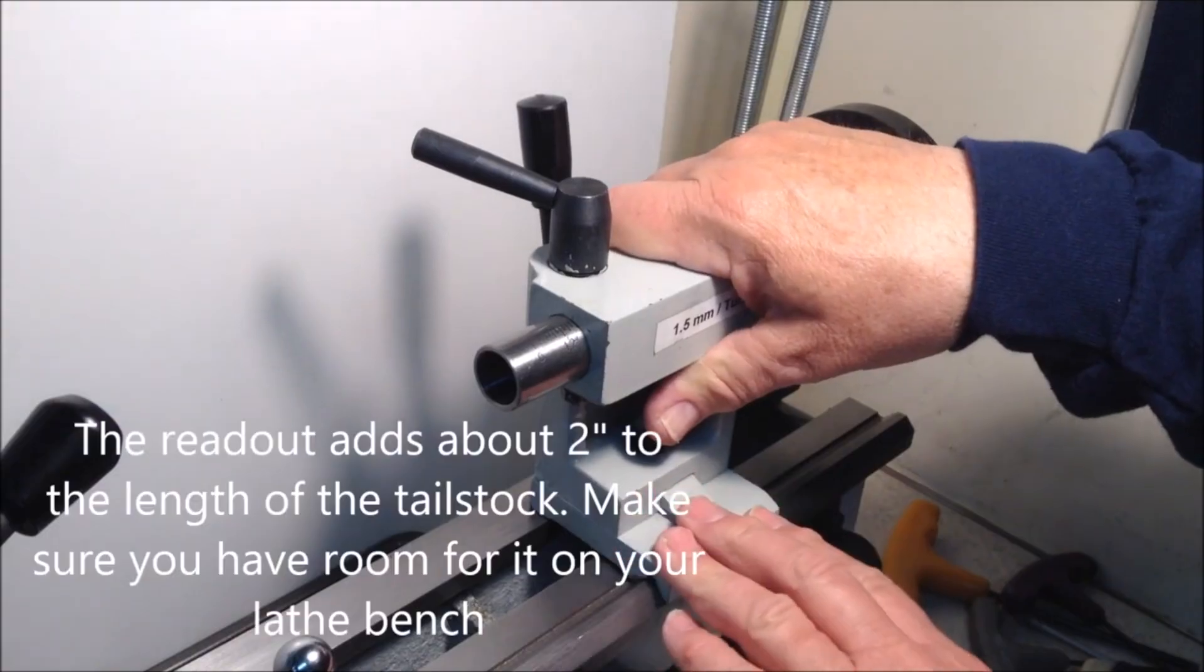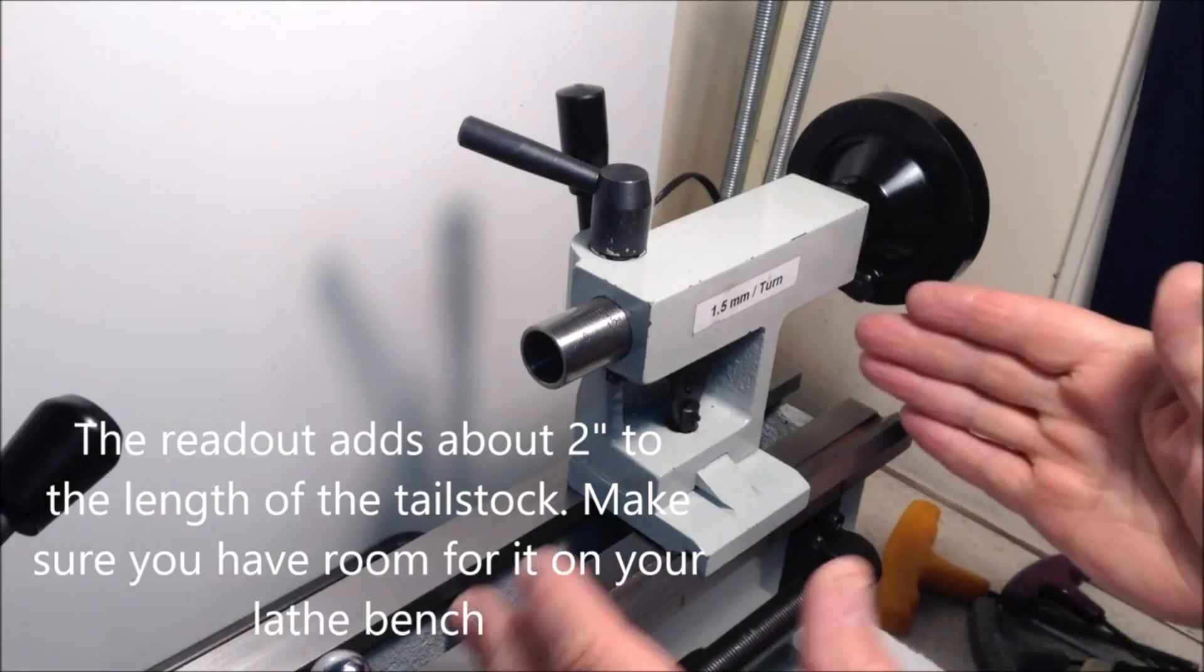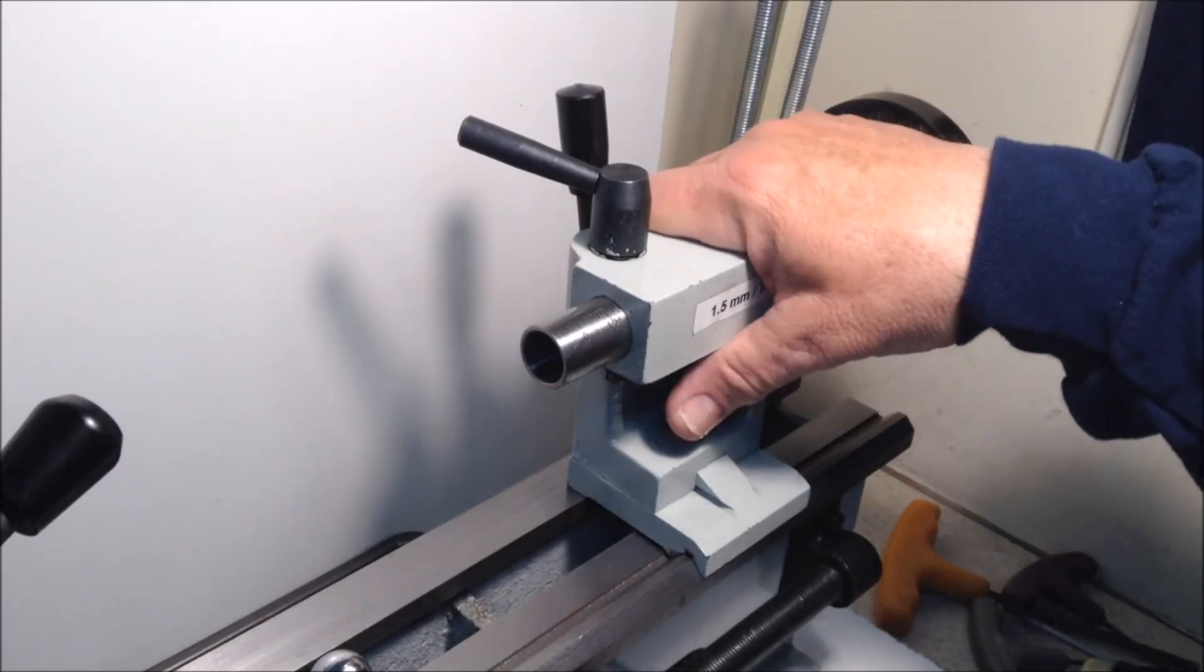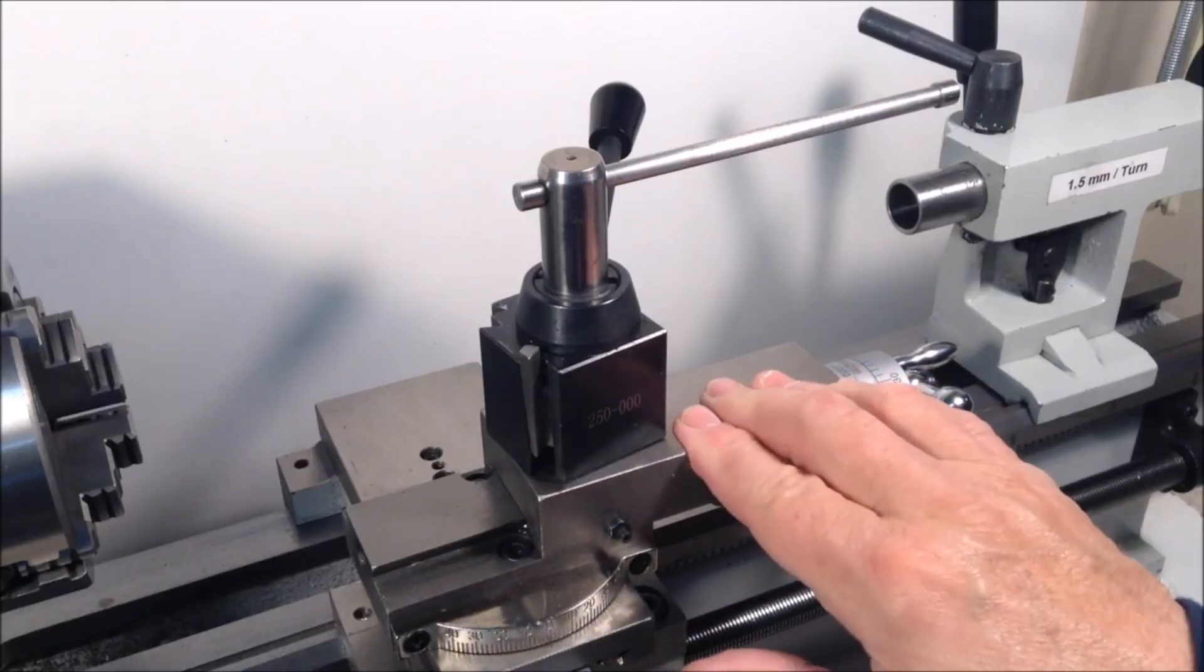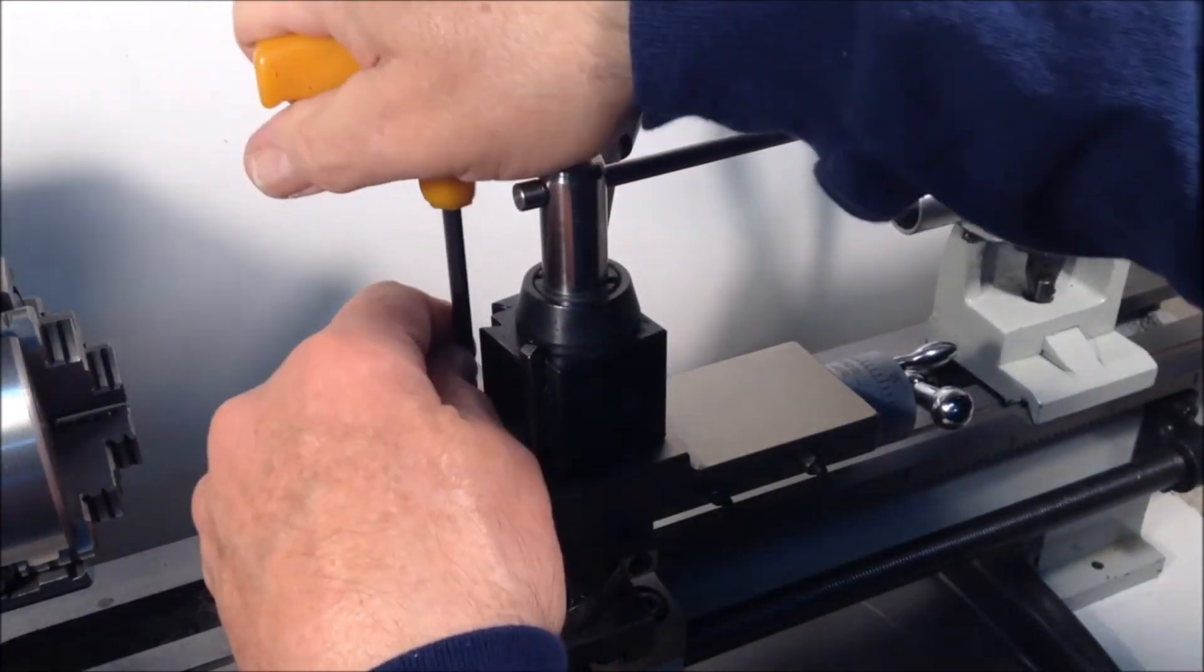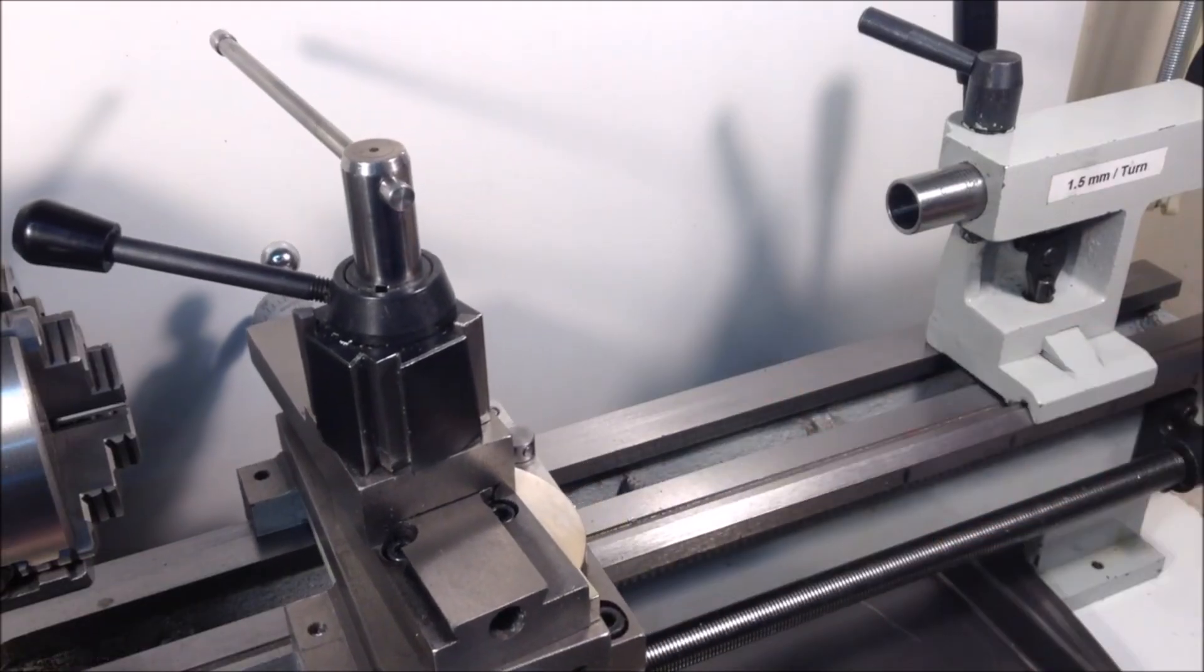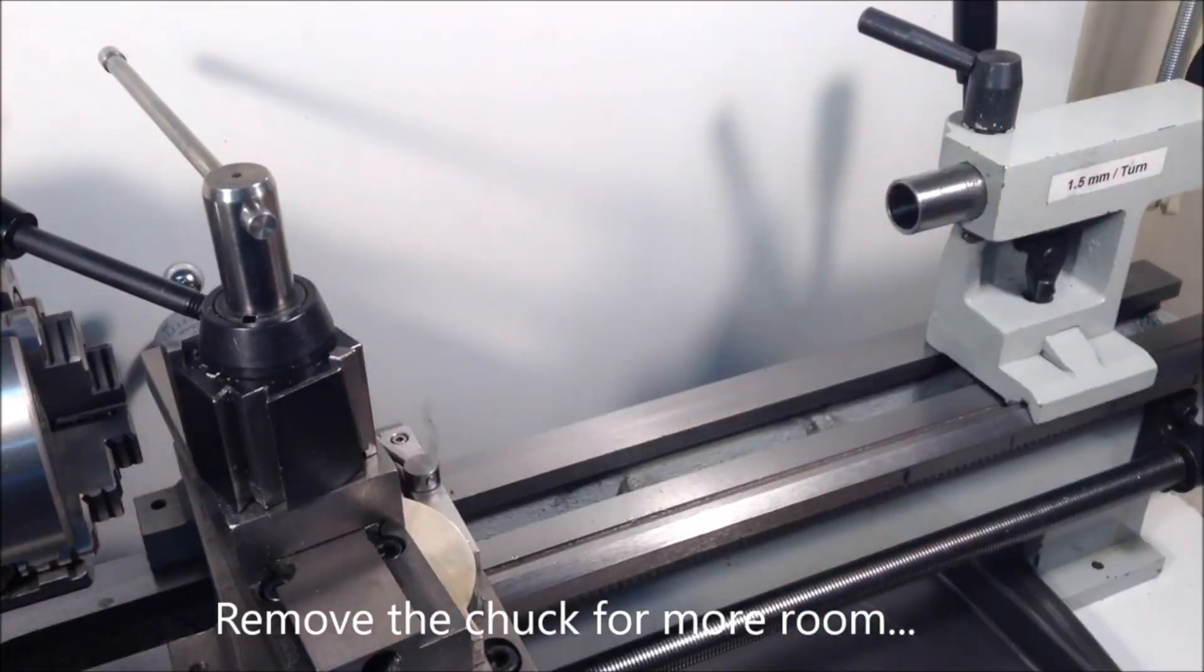This lathe that I'll be demonstrating on is a LittleMachineShop.com 7x16, so it has quite a lot of extra space down here at the tailstock end. If you have a shorter lathe, a 7x14, 7x12, or even a 7x10, you will have more limited room to work. I often keep my compound parallel to the ways, but for this job I'm going to loosen the two locking screws and rotate it around so it's out of the way.